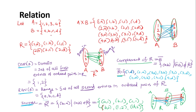Let's see some examples of properties of relation. Set A is {1, 2, 3, 4} and set B is {A, B, C, D}. A cross B consists of all possible Cartesian product ordered pairs where elements from A are at the first position and elements from B at the second position. The given relation R is: {(1,A), (1,B), (1,C), (2,B), (2,C), (2,D)}.